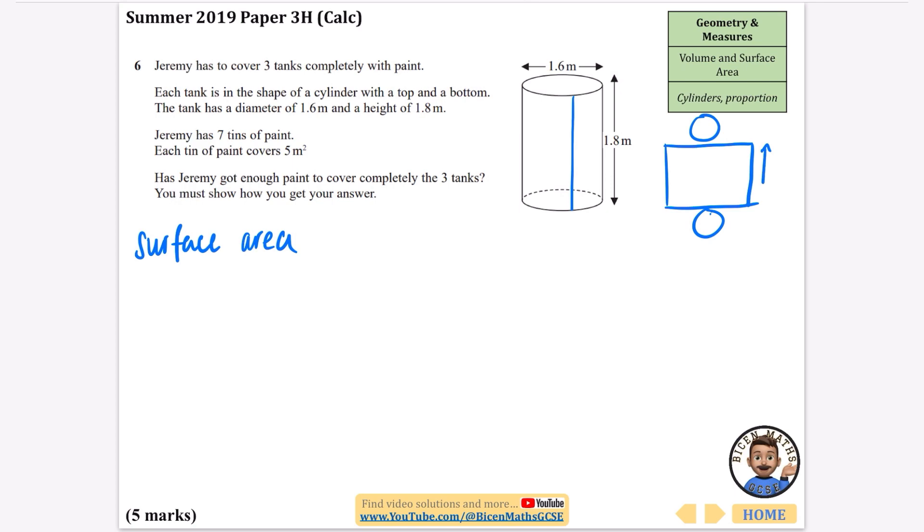The height of the rectangle is 1.8, and the width of the rectangle is the circumference—the whole part around the outside of the circle at the top. So the surface area is going to be a rectangle and two circles. To begin with, I need to find the circumference.